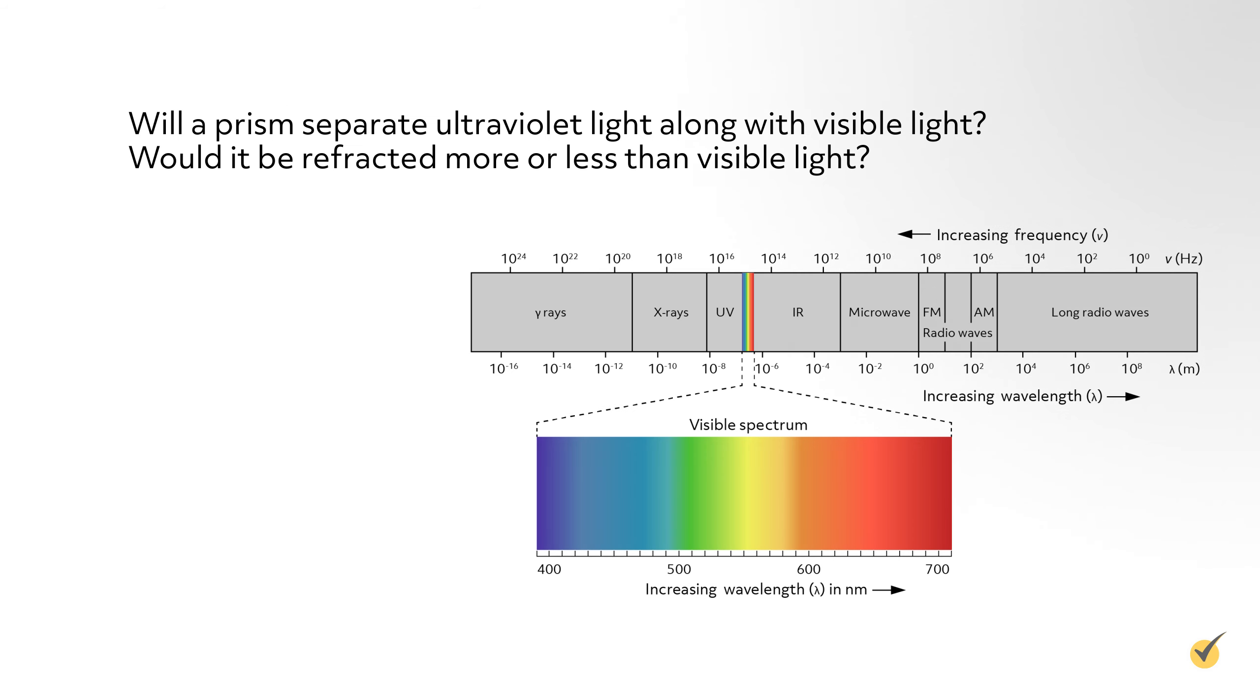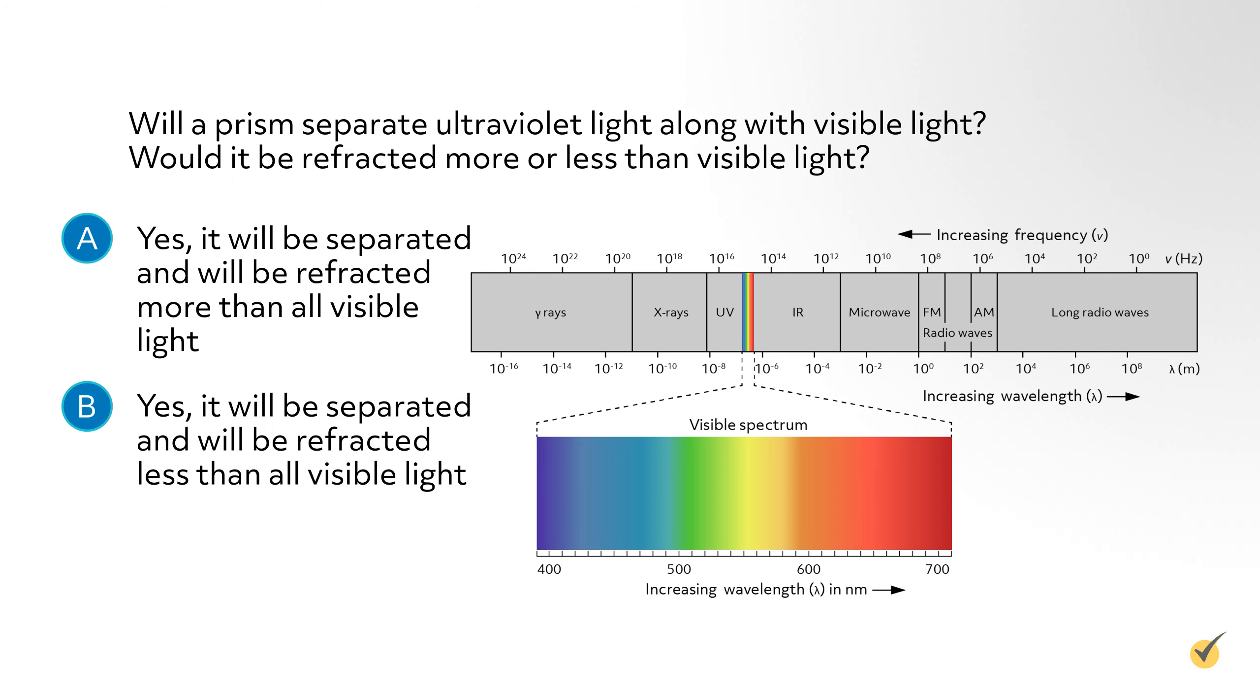Number two, will a prism separate ultraviolet light along with visible light? Would it be refracted more or less than visible light? A yes, it will be separated and will be refracted more than all visible light. B yes, it will be separated and will be refracted less than all visible light. C no, a prism will only separate visible colors. The correct answer is A, any type of light can be separated because they all have different wavelengths and frequencies which will affect the refraction. Since UV light has a higher frequency, it will be refracted more than visible light.